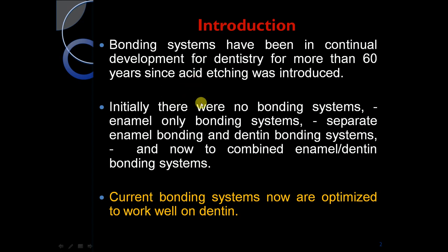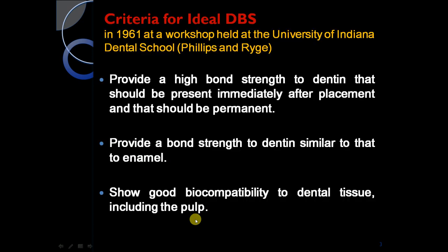Initially there was no bonding system, then enamel-only bonding systems appeared, which separates enamel bonding and dentine bonding systems. Now, combined enamel and dentine bonding systems are used, and current bonding systems are optimized to work well on dentine.